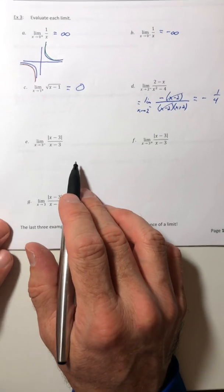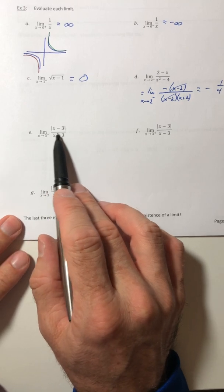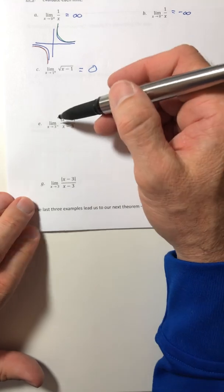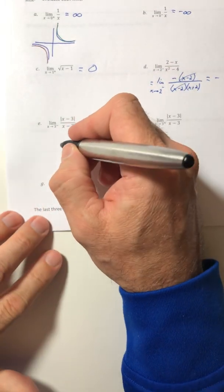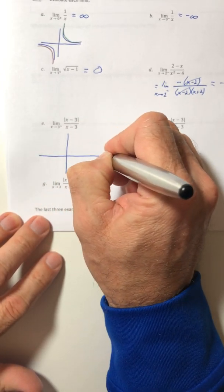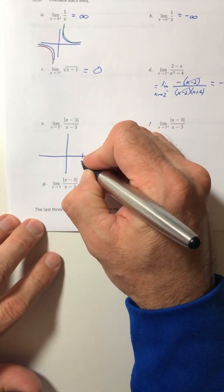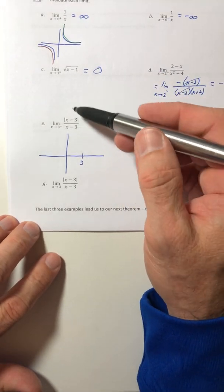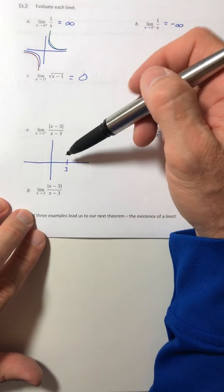Okay, part E, this one, we can't really manipulate either. The absolute value of X minus three over X minus three, this does not simplify because of the absolute value. We can't manipulate it either. So let's look at the graph. So the three is what I can't plug in. So let's look at numbers that are bigger than three.